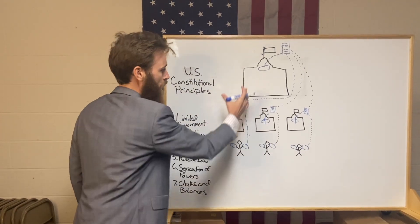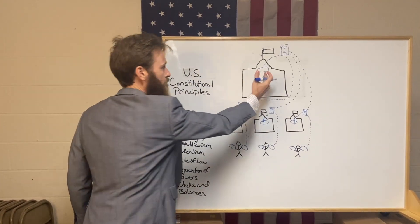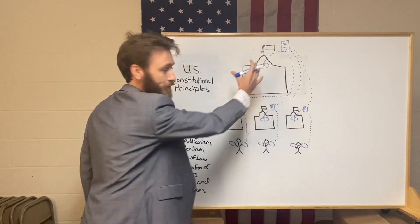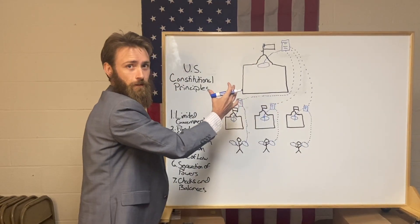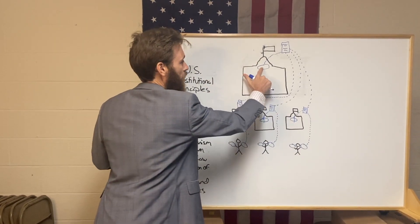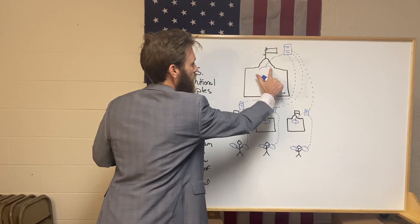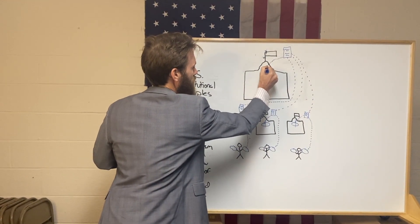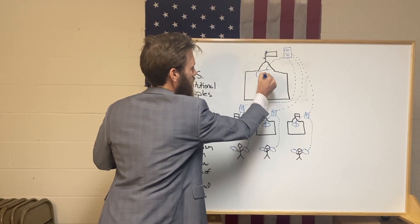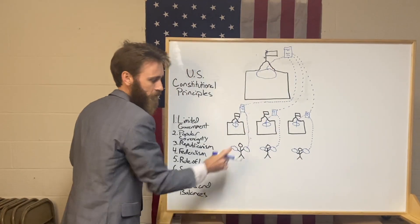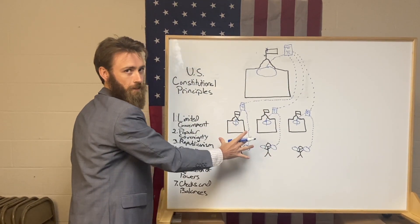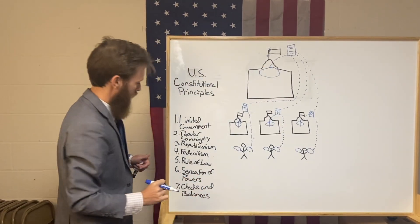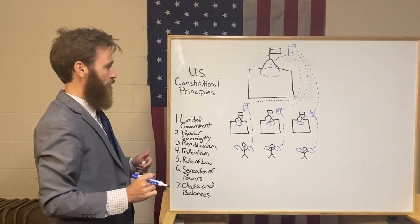The main point is: the federal government doesn't have all the power. They have a very limited amount of power at that federal level, because the only thing given was the limited power the states had to give, and they didn't even give all of that. That's limited government — whether we're talking about the state or the federal government, there are certain powers they never had.